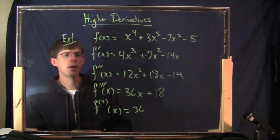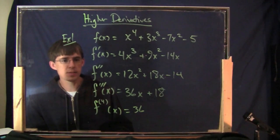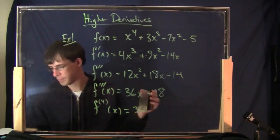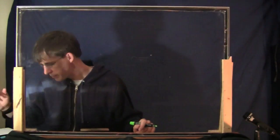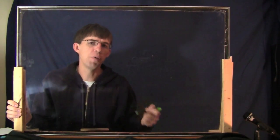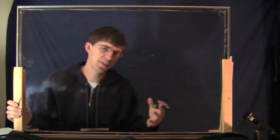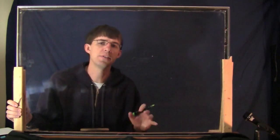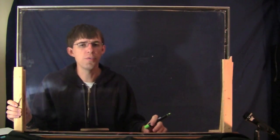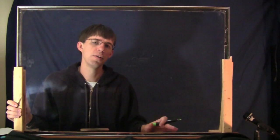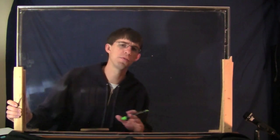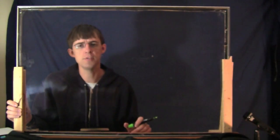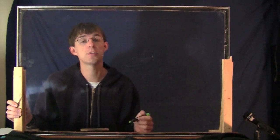What I want to talk about today is why you would want to do this — what these things actually represent. It turns out they are actually quite useful. The second derivative is something you encounter fairly often in the real world. The third, less so. The fourth and higher, you pretty much don't — you have to be in fairly obscure situations in order to make use of those. But the second derivative is quite useful.